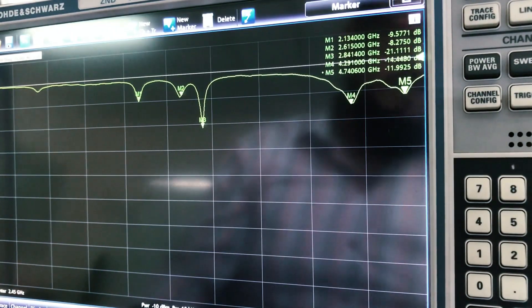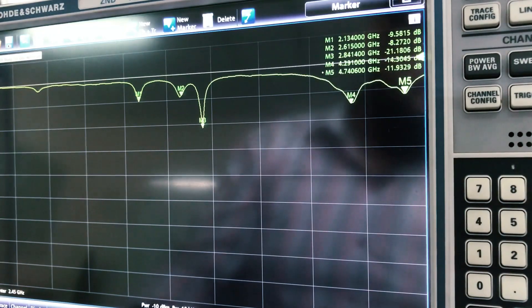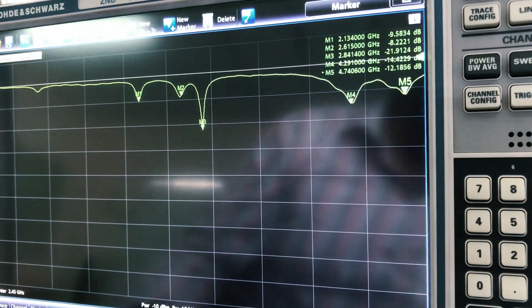So this is how basically you check antennas using your vector network analyzer. So I hope you like this tutorial for real.